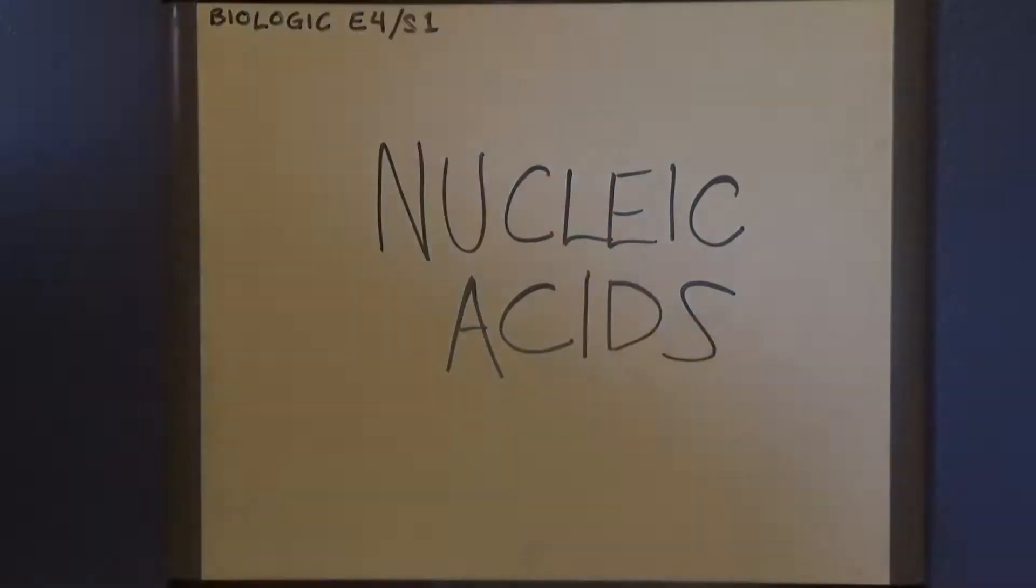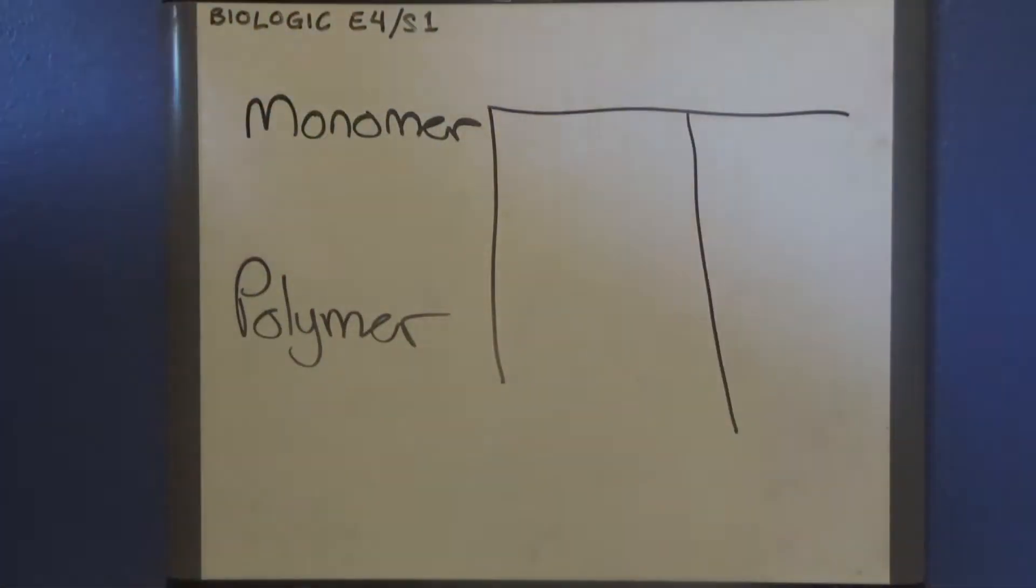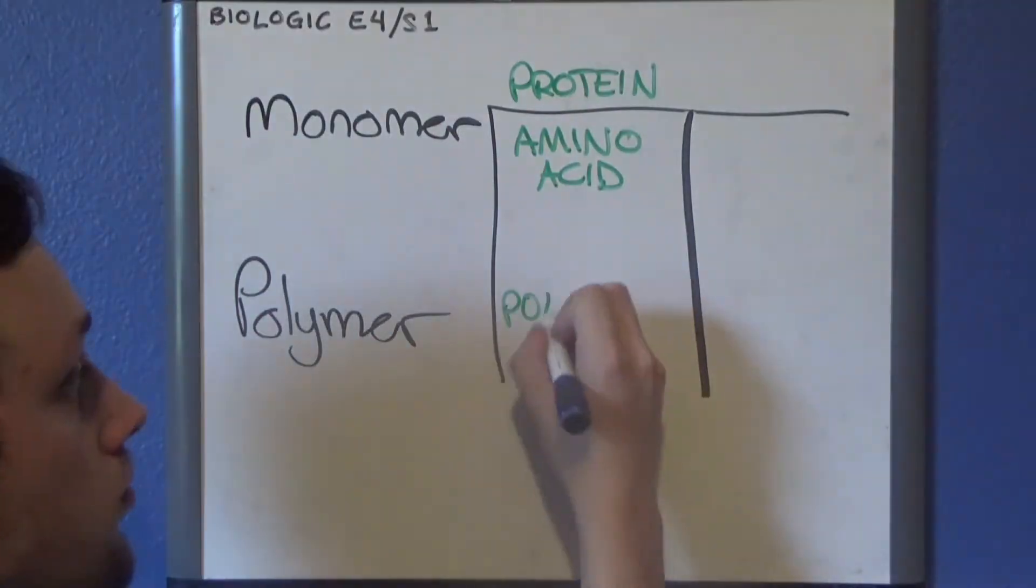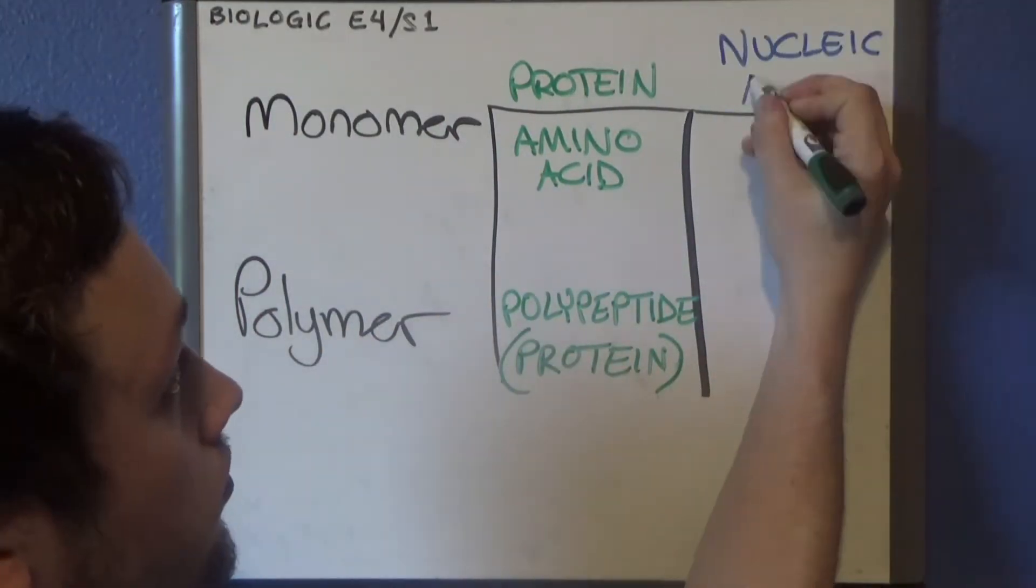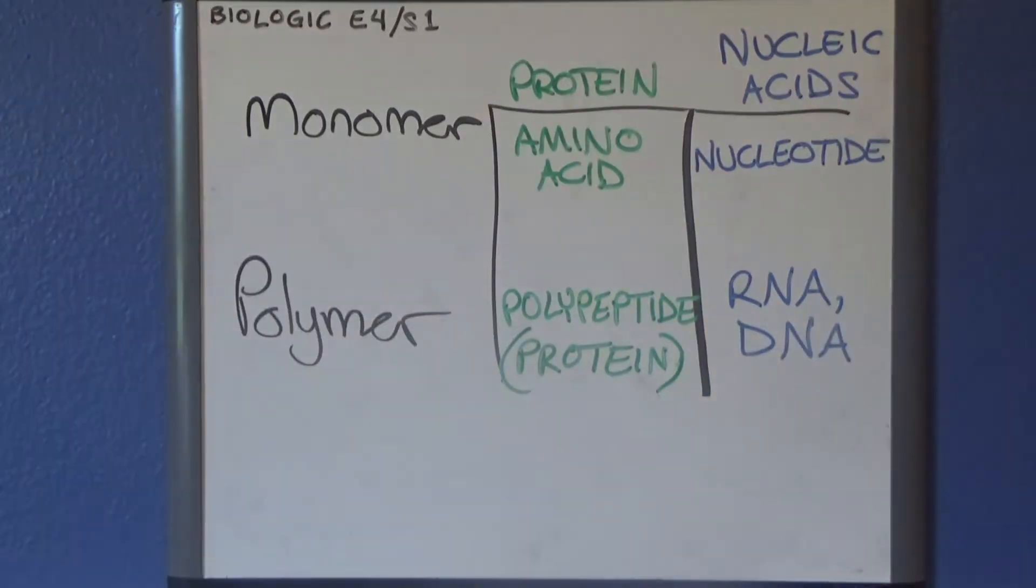If you recently listened to episode three about proteins, you should be familiar with the concept of polymers, basically a chain of monomers connected together into a larger structure. Just like polypeptides, nucleic acids are biopolymers. While the monomers in a polypeptide are called amino acids, the monomers in a nucleic acid are called nucleotides or ribonucleotides.